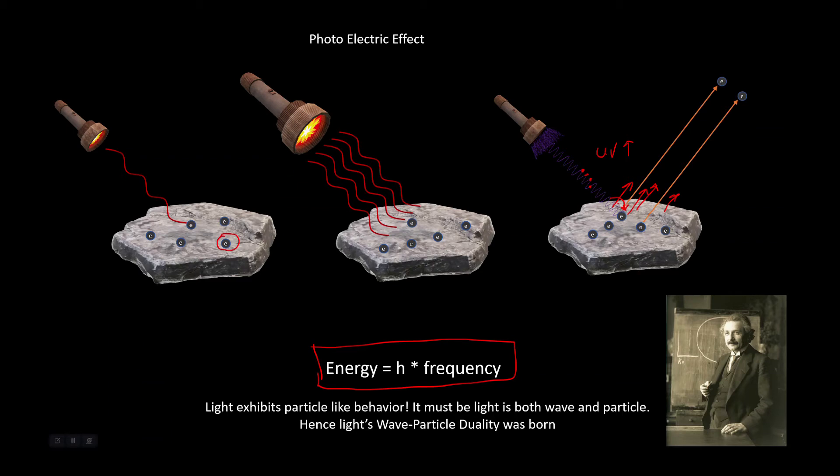It seems that light exhibits both wave and particle-like behavior. Hence, wave-particle duality was born for light. Einstein eventually went on to win the Nobel Prize for his work on the photoelectric effect a few years later.